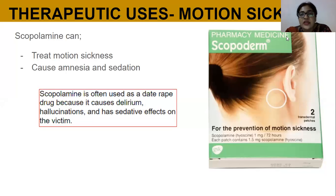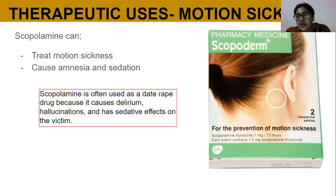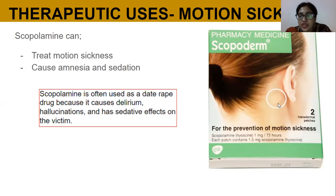Scopolamine is used in motion sickness. It causes amnesia and sedation, and it is actually used as a date rape drug because it causes delirium — sudden forgetfulness, hallucinations, and sedation — so the person doesn't remember what happened. Scopolamine is given as a transdermal patch attached at the back of the ear to control delivery.